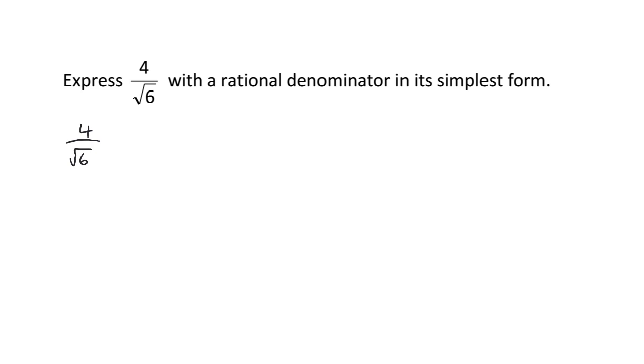And the way we're going to do that is we are going to use our knowledge of equivalent fractions. And we are going to multiply the numerator and the denominator by the surd. So for our numerator, 4 times root 6 works the same way as algebra, it just becomes 4 root 6. Root 6 times root 6 is going to give me 6.